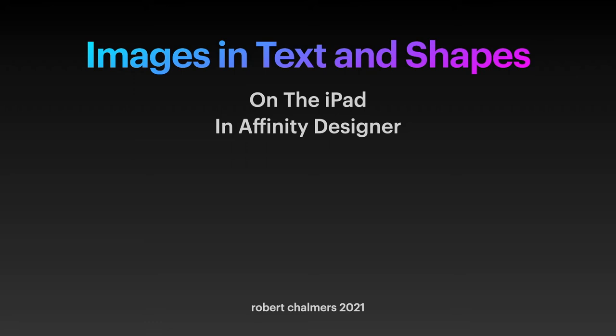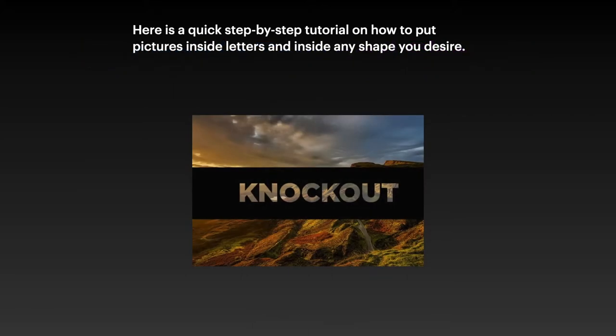Welcome to another video in our basic skill set for Affinity Designer on the iPad. In this case we're looking at images in text and shapes — that is, if you have a block of text or a shape and you want an image to appear inside it, often referred to as punched out text. It's a quick step-by-step tutorial on how to put pictures inside letters and inside any shape you desire, such as the knockout you can see there with the mountain range behind the words.